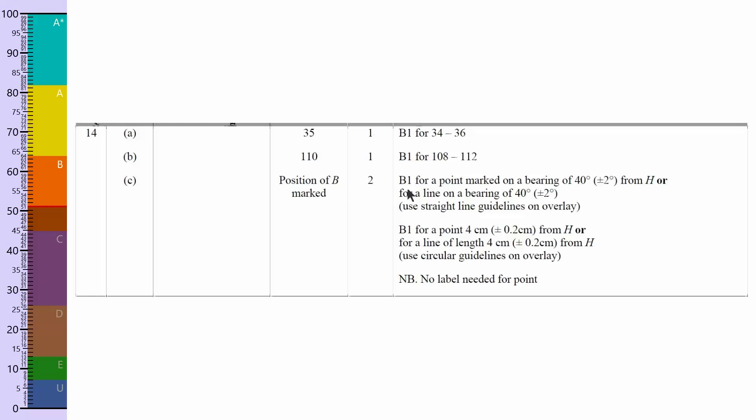And for C, you just need to mark the position of B. So you've got one mark if it was a bearing of 40 degrees from H, or for a line on a bearing 40 degrees - so that line was probably quite a good idea to draw. And then for a point that's four centimeters from H, and that's how you got your marks.